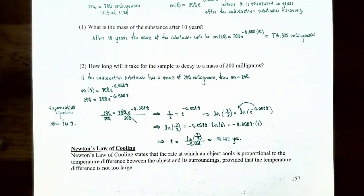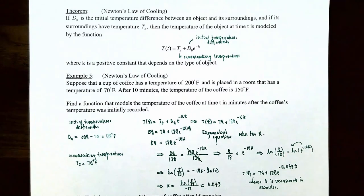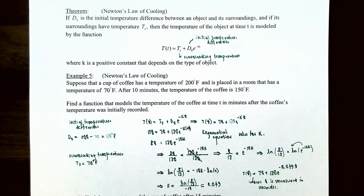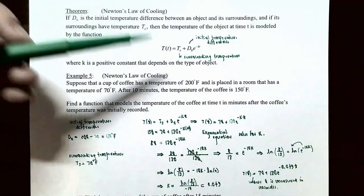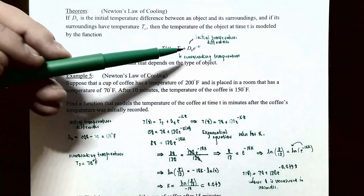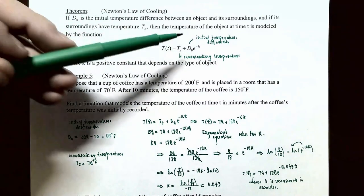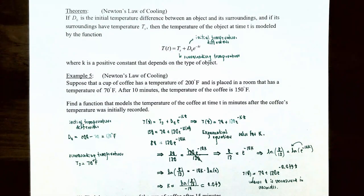The last topic is Newton's law of cooling. Newton's law of cooling states that the rate at which an object cools is proportional to the temperature difference between the object and its surrounding temperature, provided the difference is not extremely large. The theorem: if d₀ is the initial temperature difference between the object and surroundings, and the surrounding temperature is Tₛ, then the temperature of the object at time t is T(t) = Tₛ + d₀ · e^(−kt), where k is a positive constant depending on the type of object.